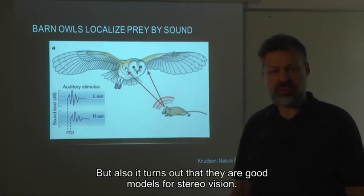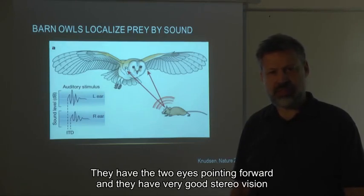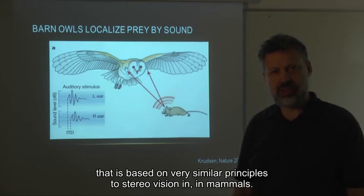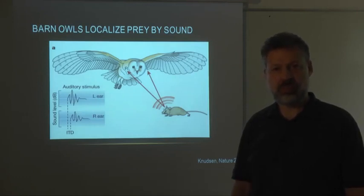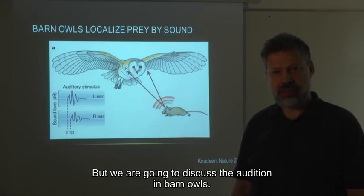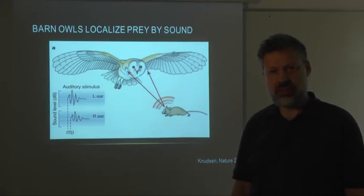Barn owls turn out to be wonderful models for the auditory system. But also, it turns out that they are good models for stereo vision. They have two eyes pointing forward and very good stereo vision based on very similar principles to stereo vision in mammals. But we are going to discuss audition in barn owls.